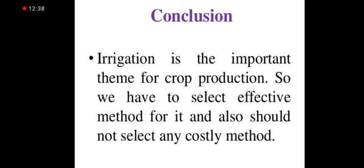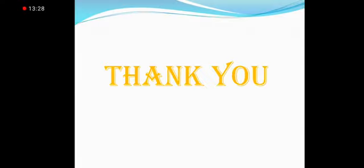In conclusion, we saw two main types of irrigation methods: surface irrigation and subsurface irrigation. Irrigation is an important aspect of crop production, so we must select an effective method according to the field, terrain, crop type, and temperature. We should select a method that increases crop yield and production, benefiting farmers, urban people, and the country's prosperity, without being unnecessarily costly. I hope you have understood the methods of irrigation in both surface and subsurface irrigation.